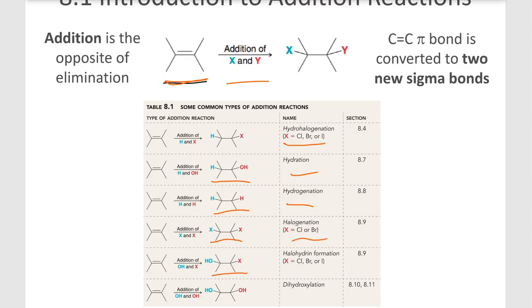Then OH and X, which is halohydrin formation. And then OH and OH, which is dihydroxylation. So we're going to look at different types for some of these reactions. And we're going to look at all these reactions in detail.